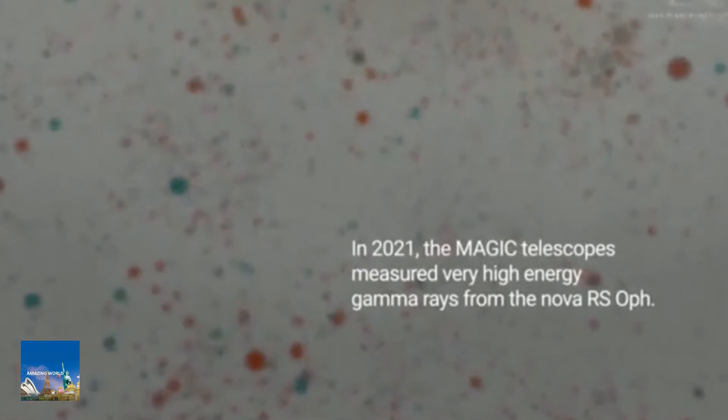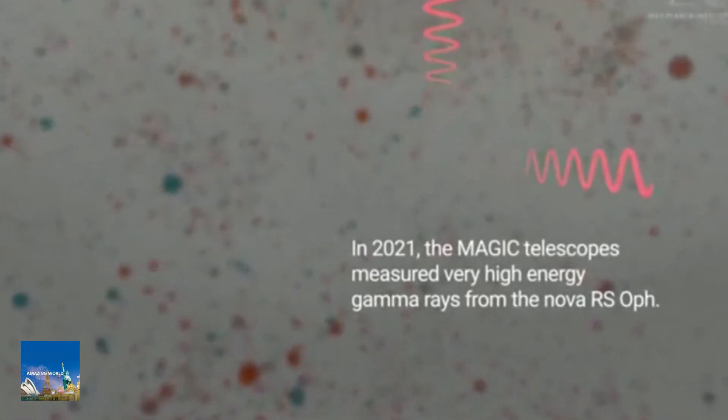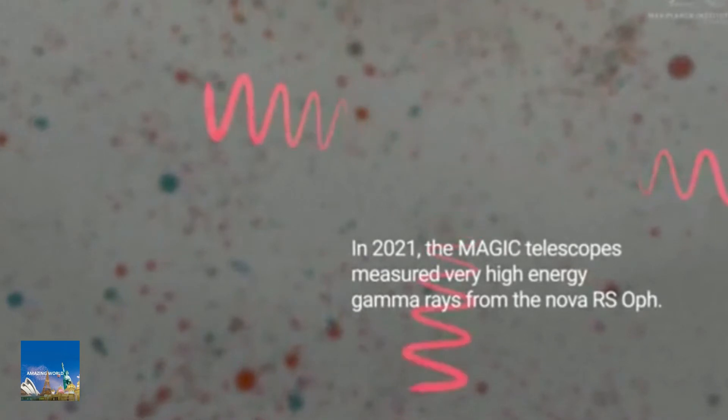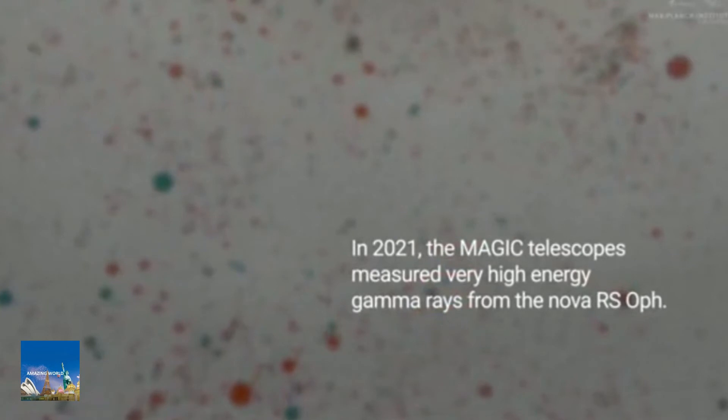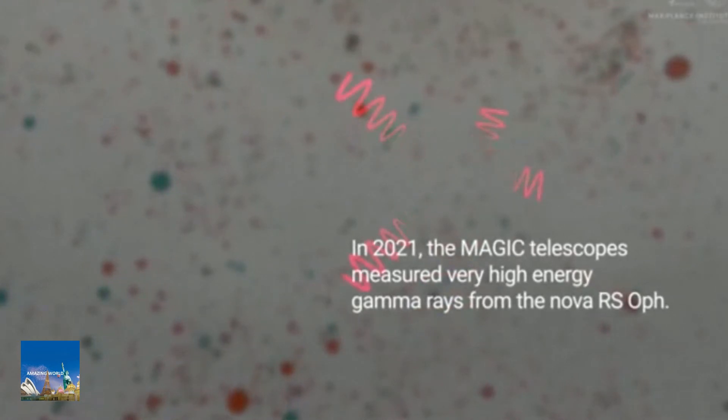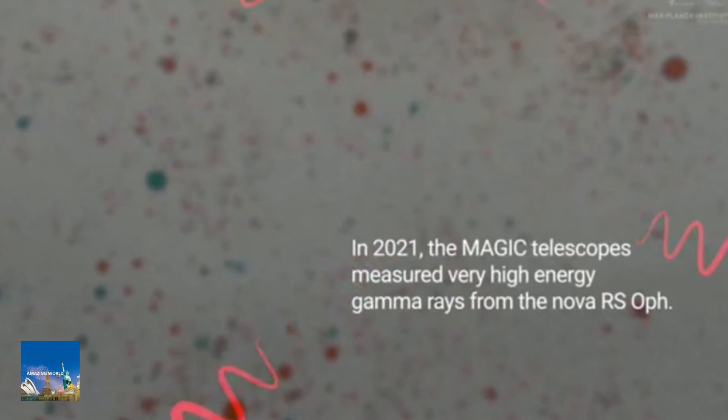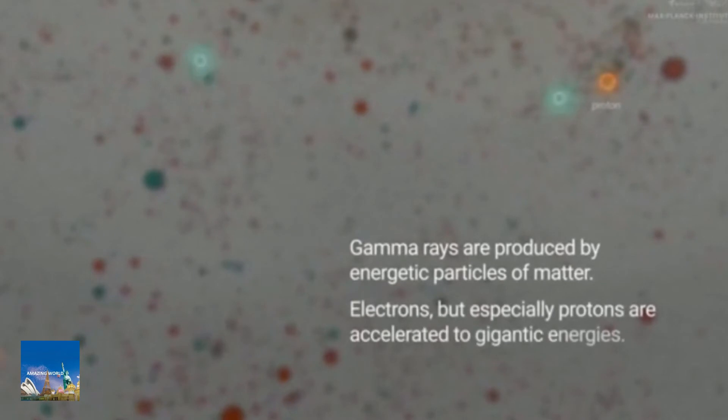It had been speculated that such explosions involve high energies, but the exact details were unclear, especially for this particular nova. The two MAGIC telescopes recorded gamma rays with the value of 250 gigaelectron volts (GeV), among the highest energies ever measured in a nova.